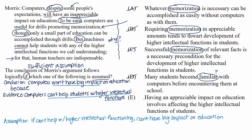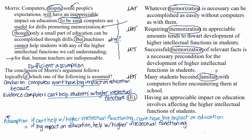E: Having an appreciable impact on education involves affecting the higher intellectual functions of students. This is a match for our prediction. You might have been surprised by the wording. We said our prediction was that if something can't help students with higher intellectual functioning, then that something can't have a big impact on education — which is logically equivalent to: if something does have a big impact on education, then it must involve affecting the higher intellectual functions of students. Logically equivalent statements are like: 'If I'm at the beach, then I must have found my sunscreen' is logically equivalent to 'if I didn't find my sunscreen, then I'm not at the beach.'